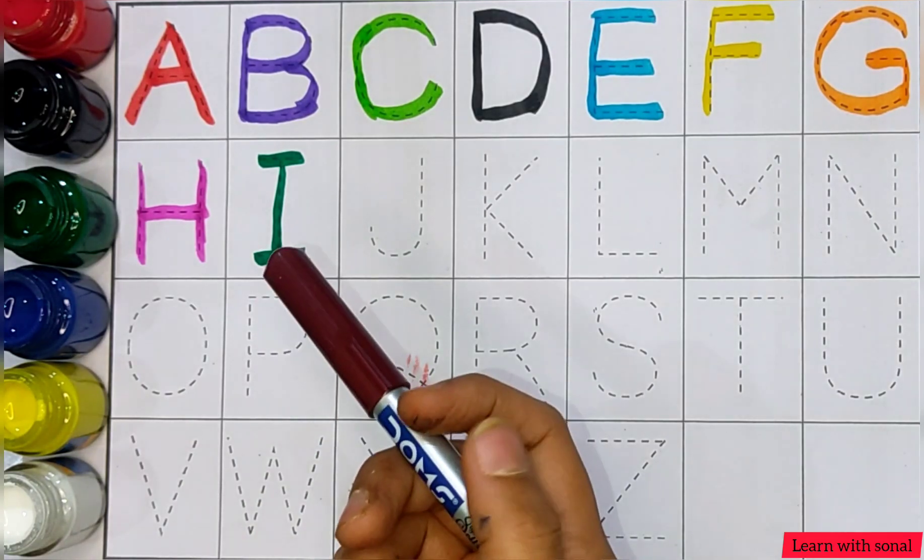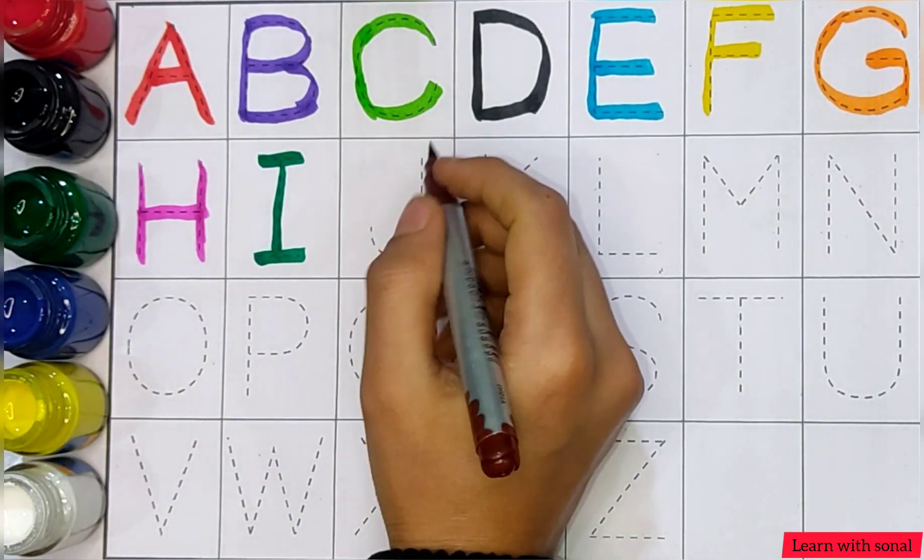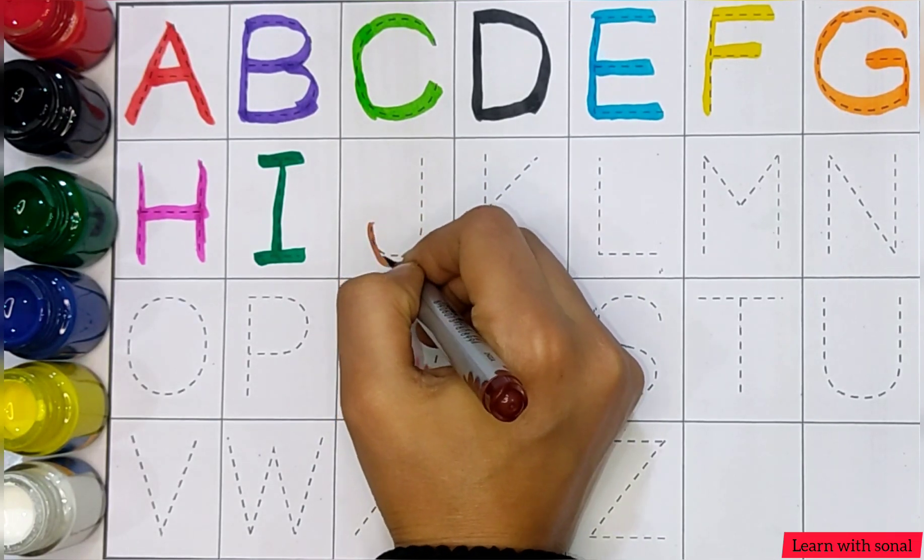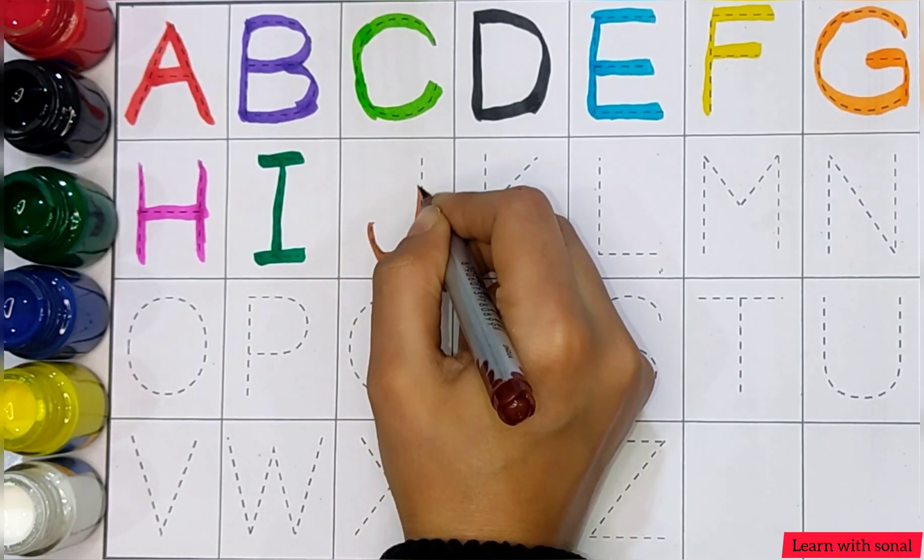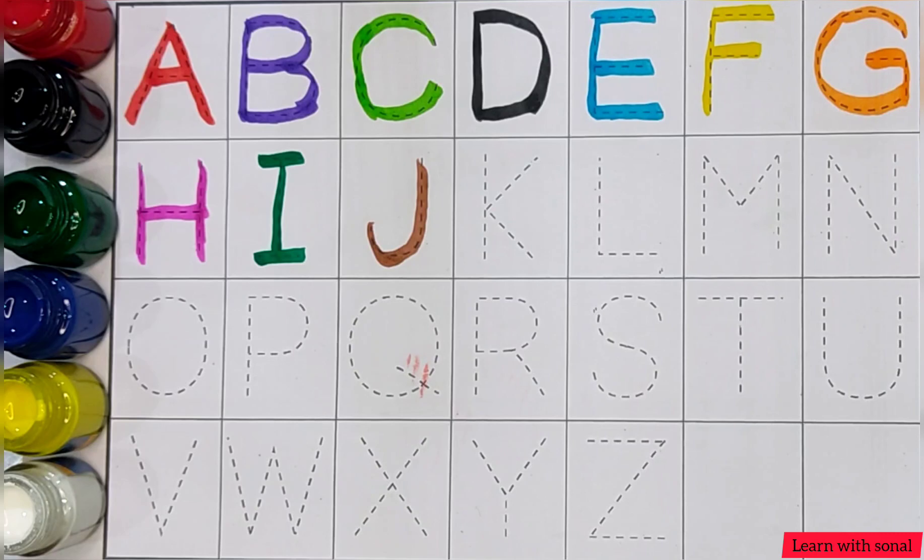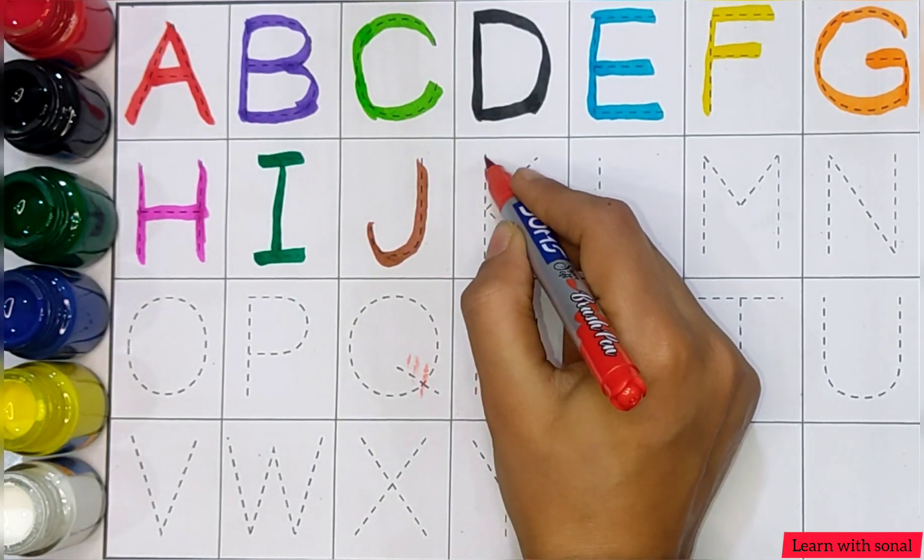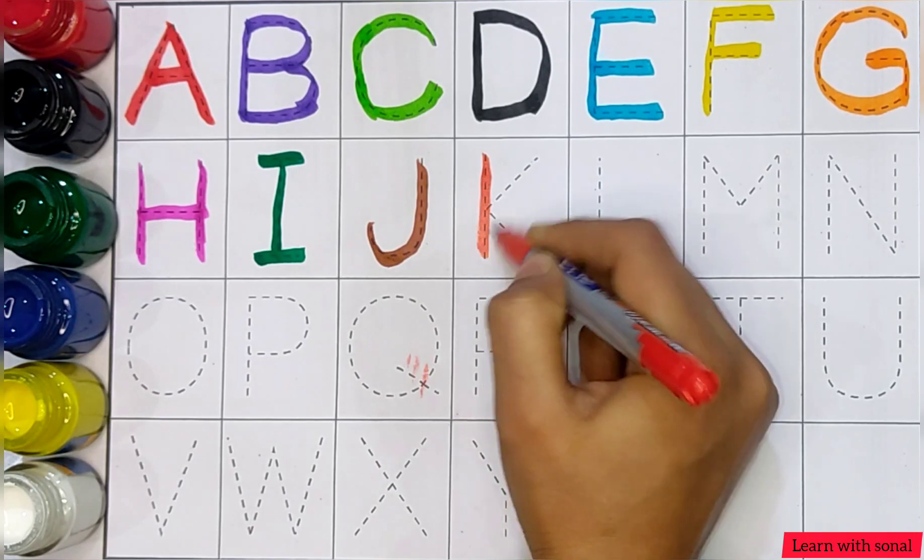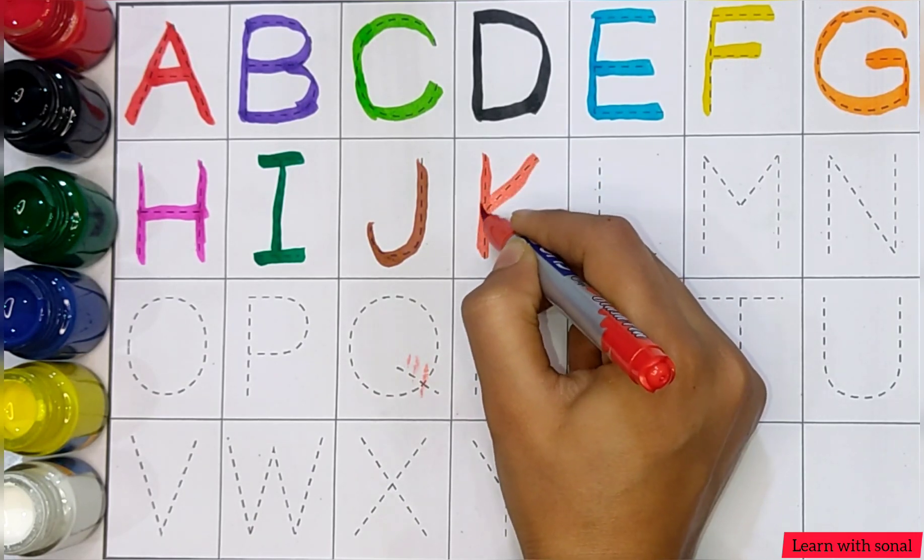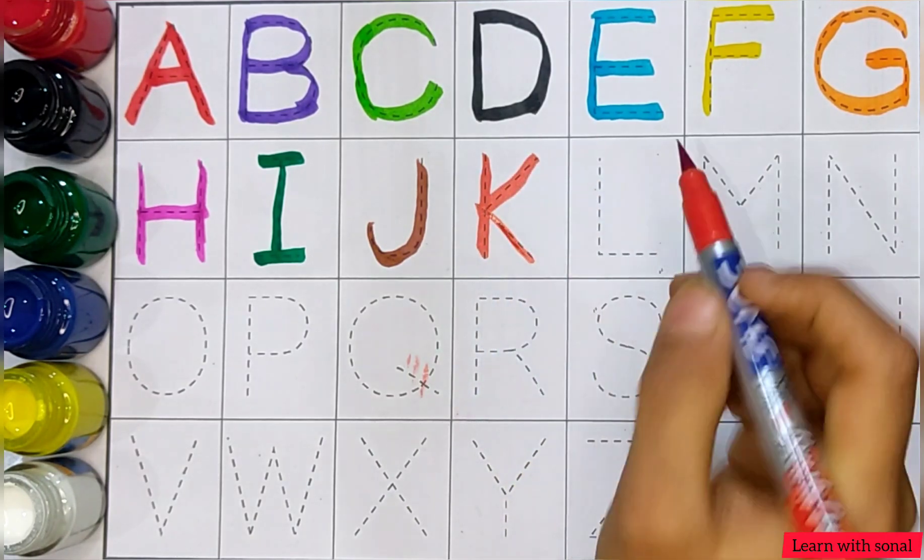Brown color. J. J for jar. Red color. K. K for king.